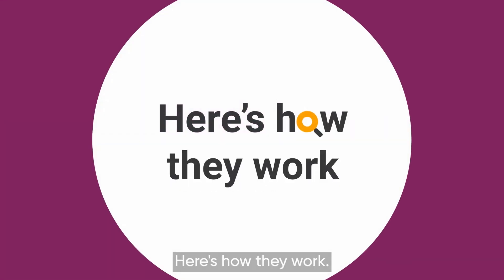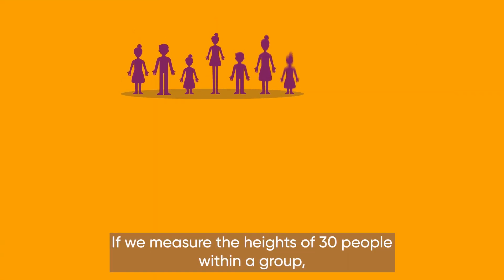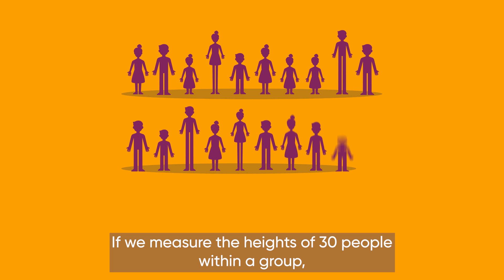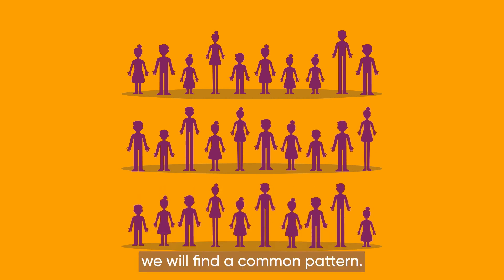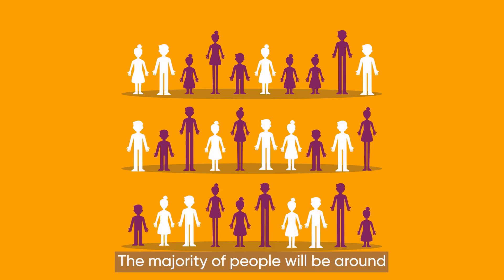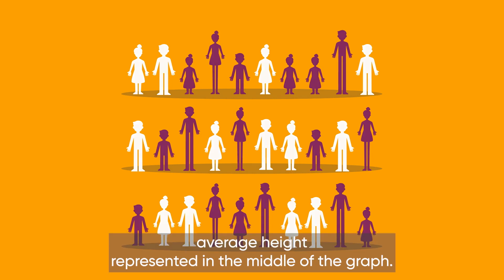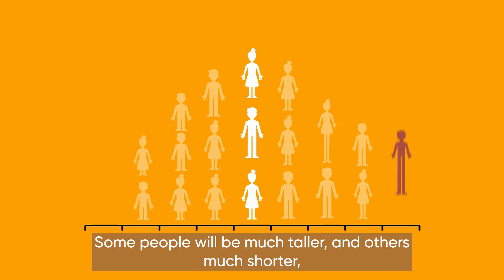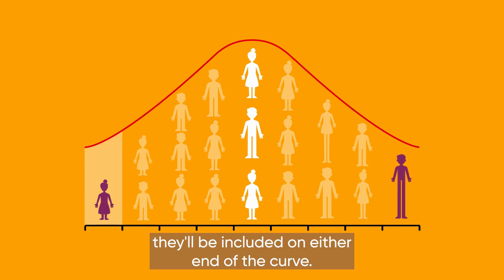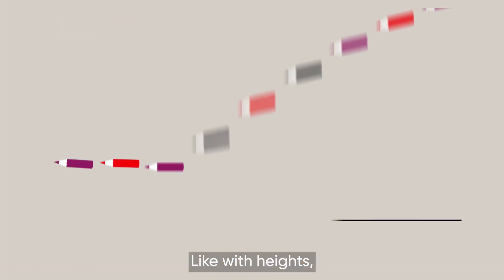Here's how they work. If we measure the heights of 30 people within a group, we'll find a common pattern. The majority of people will be around average height, represented in the middle of the graph. Some people will be much taller, and others much shorter. They'll be included on either end of the curve.